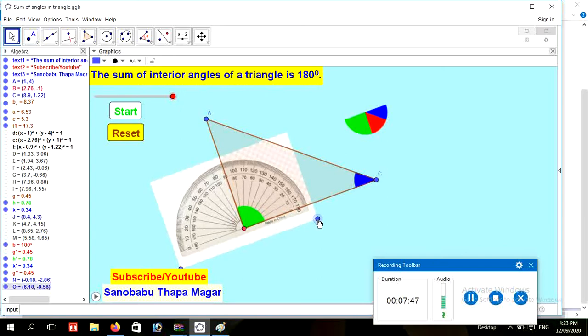Place the protractor like this. Align the horizontal line and the side of the angle you need to measure. This line measured 90 degrees. That's why angle B is 90 degrees.